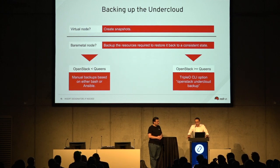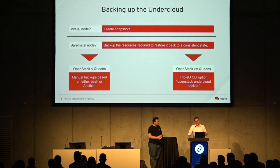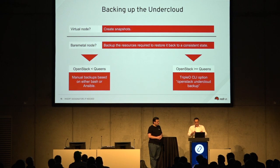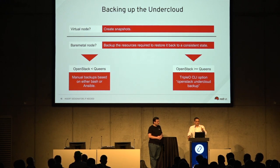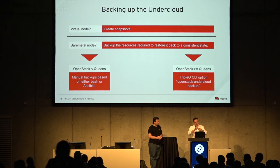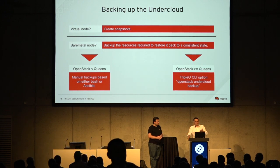Starting from Queens, if you're using TripleO, there's a new CLI option: you can execute `openstack undercloud backup` from your undercloud. It creates a database dump, creates all the filesystem backup, and stores this in a tar file in a Swift container called 'undercloud_backups' with a timestamp of the date the backup was created.